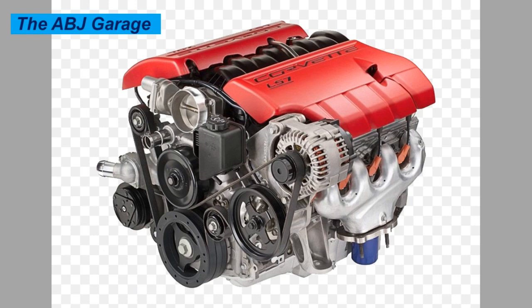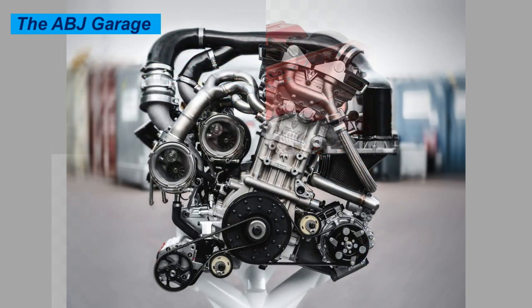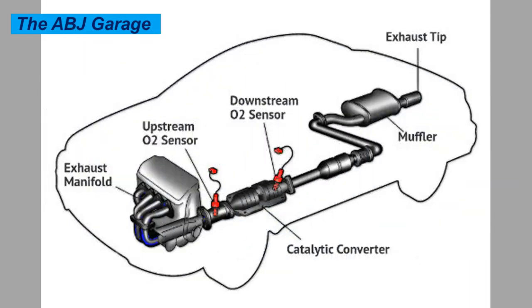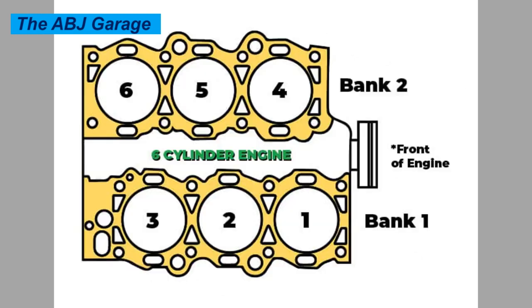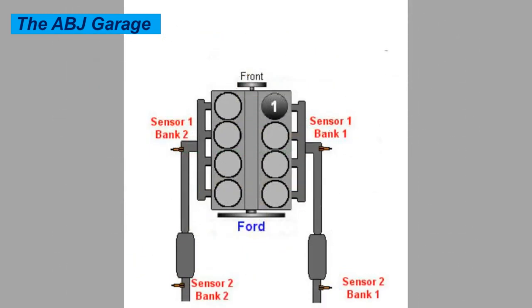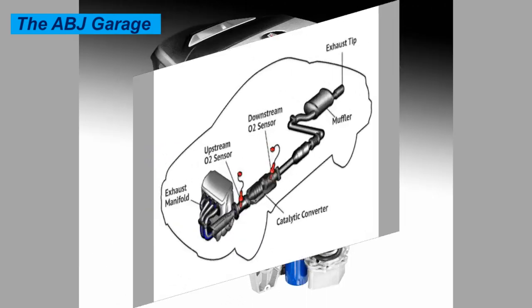Code P0171 indicates a lean air-fuel mixture. P0174 also indicates a lean air-fuel mixture. But what is the difference between these two? P0171 indicates bank one of the engine has a lean fuel mixture, whereas P0174 indicates bank two of the engine has a lean mixture. Basically, P0171 code points to the engine side with cylinder number one, while P0174 points to the cylinders on the other side on a V6 or V8 engine.